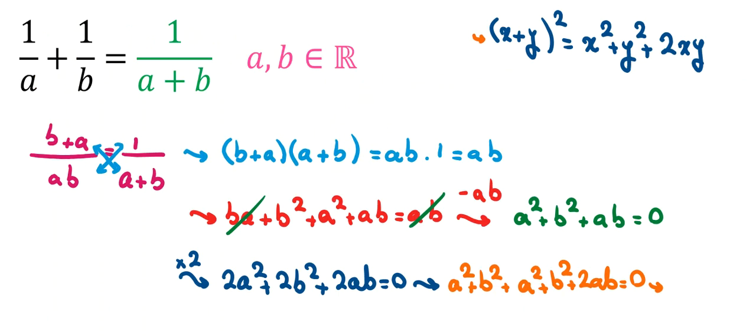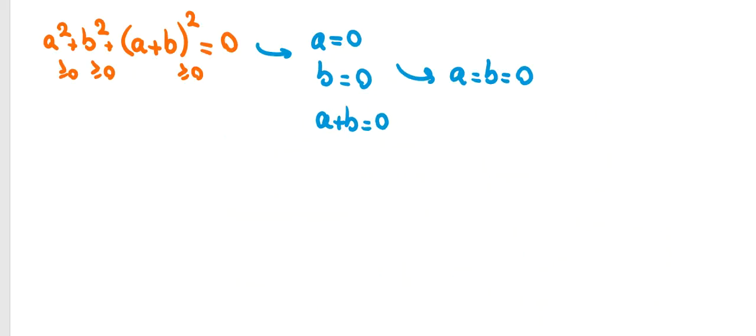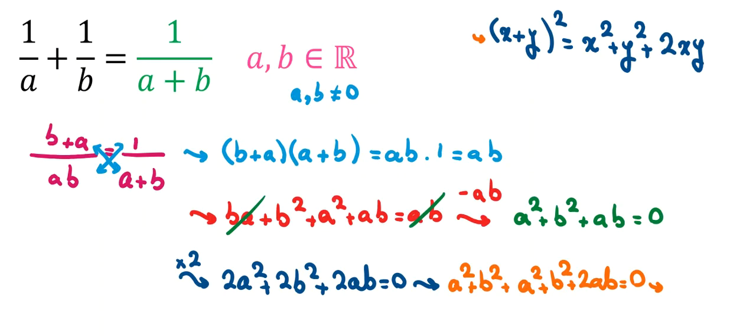But let's see, does it satisfy the main equation? We have A in the denominator and B in the denominator, so they cannot be 0. A and B are not 0. So, this answer is not good. We proved that there is no answer that satisfies this equation.